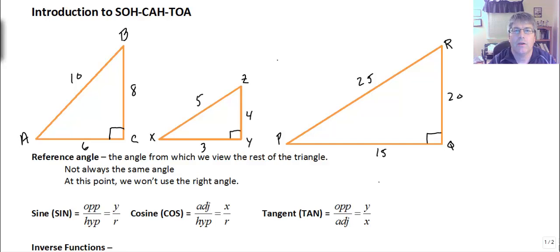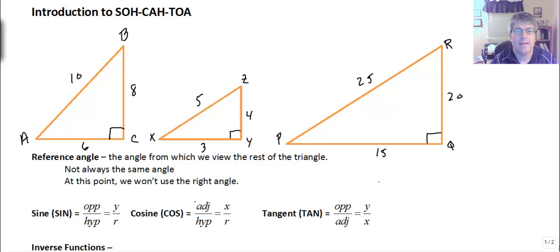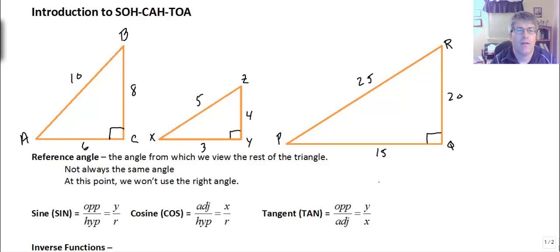Welcome back. In this video, we are going to review some of the basics of right triangle trigonometry. One of the foundations of right triangle trigonometry is the mnemonic SOHCAHTOA. SOHCAHTOA stands for: sine is the opposite over the hypotenuse, the cosine is the adjacent over the hypotenuse, and the tangent of an angle is the opposite over the adjacent. These trig functions are really ratios.